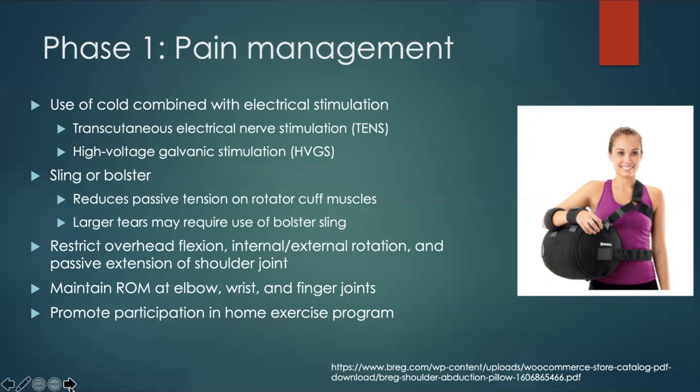Limiting certain motions can also protect the repair, which is why it is important to restrict overhead flexion, internal and external rotation, and passive extension at the shoulder joint. Additionally, it is important to maintain range of motion and strengthen the elbow, wrist, and finger joints to prevent losing strength in the upper extremity caused by disuse. It is important to teach the client the value of consistently participating in the home exercise program throughout the therapy process as well.